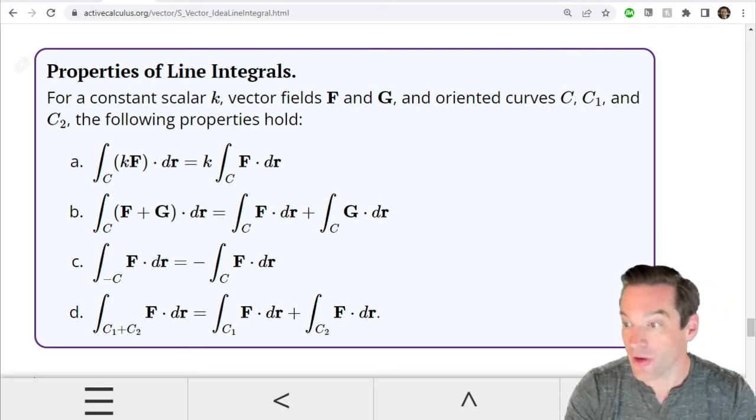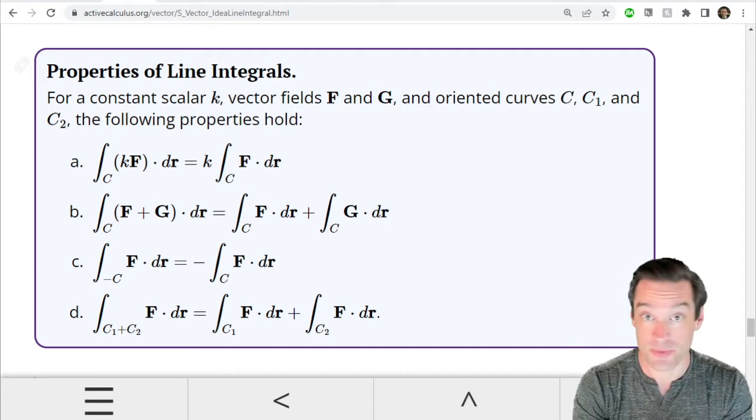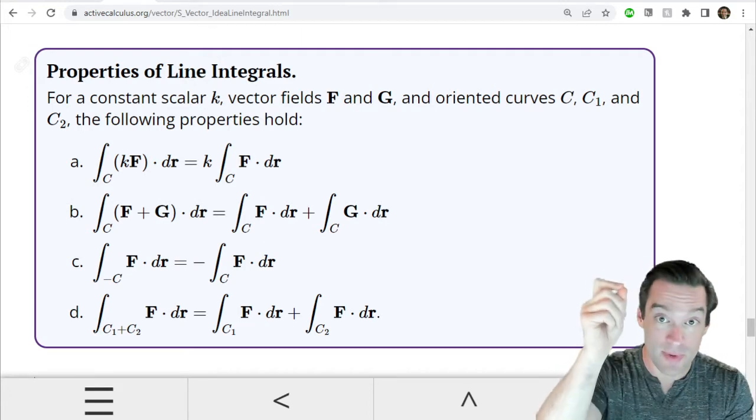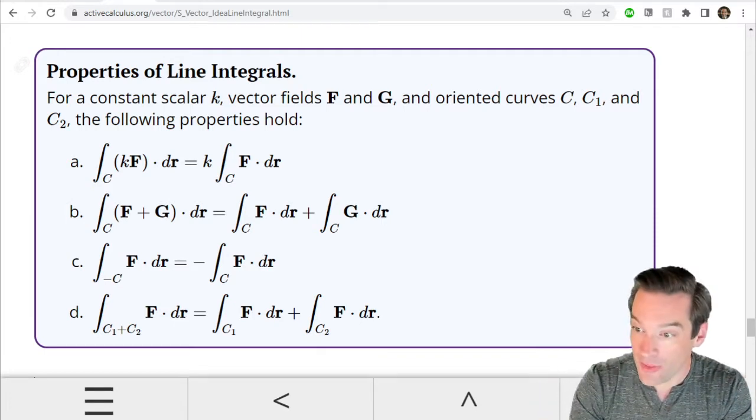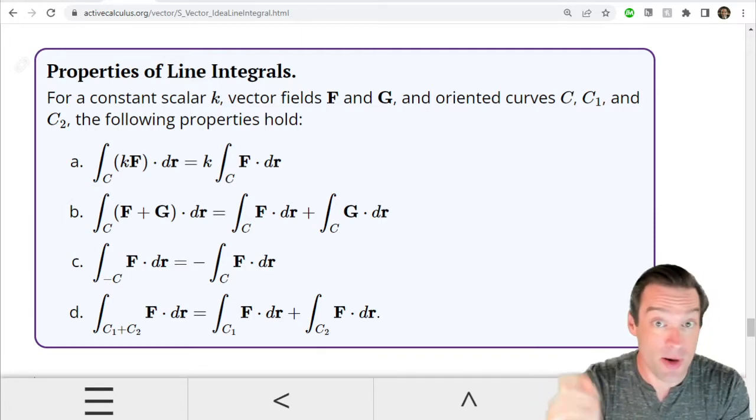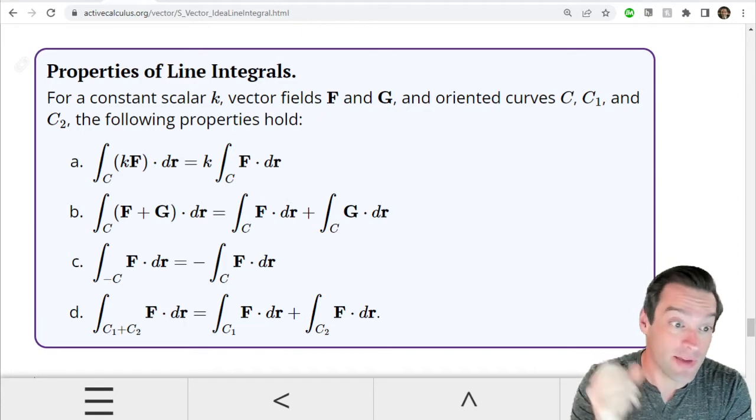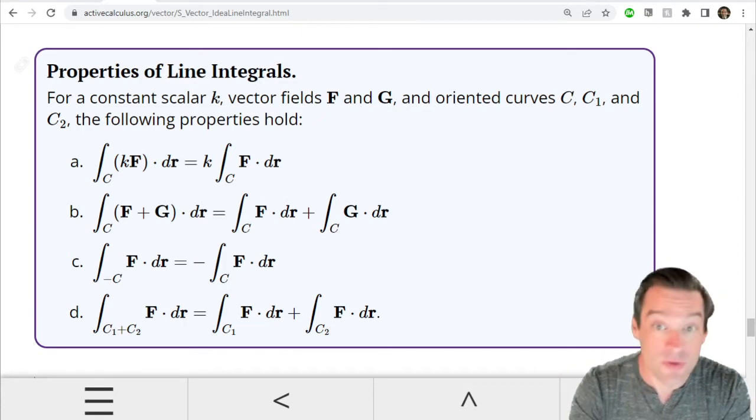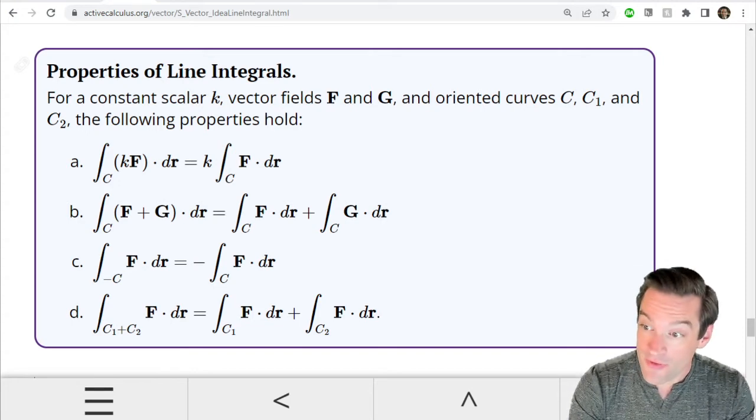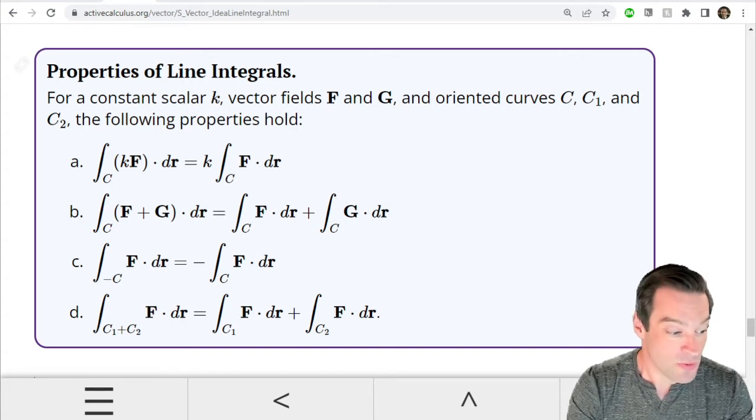The other thing we can do with a curve is we can reverse its orientation. So instead of going from point A to point B we can go from point B to point A instead. We call that taking the opposite of a curve. When I reverse the orientation of a curve, the value of the path integral just reverses sign.